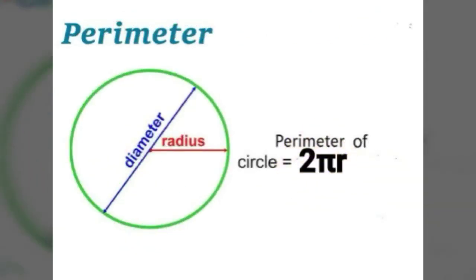Perimeter of Circle. Perimeter of Circle equal to 2 pi r. Here pi equal to 3.14 and r equal to radius.